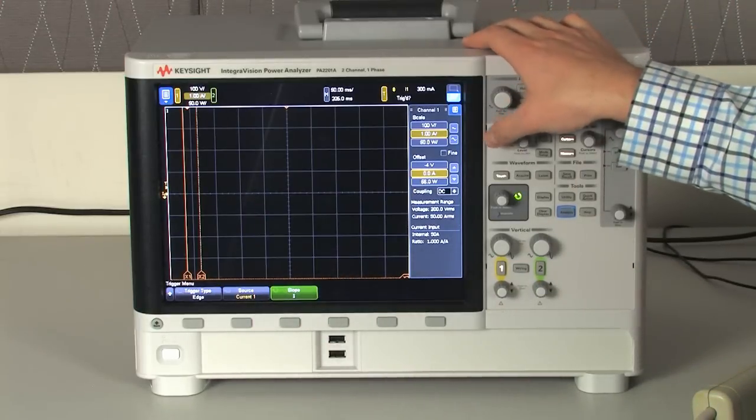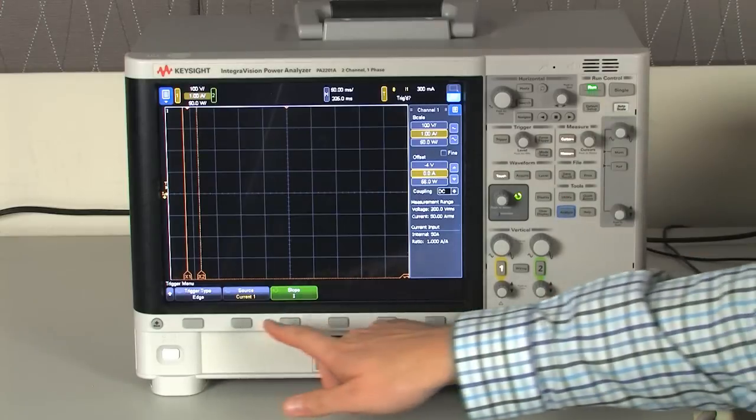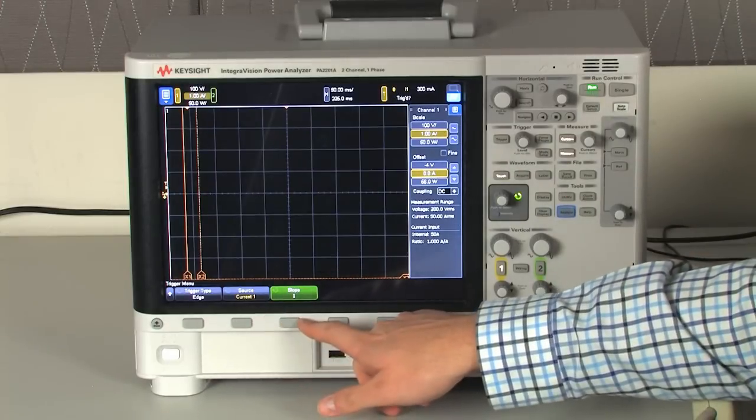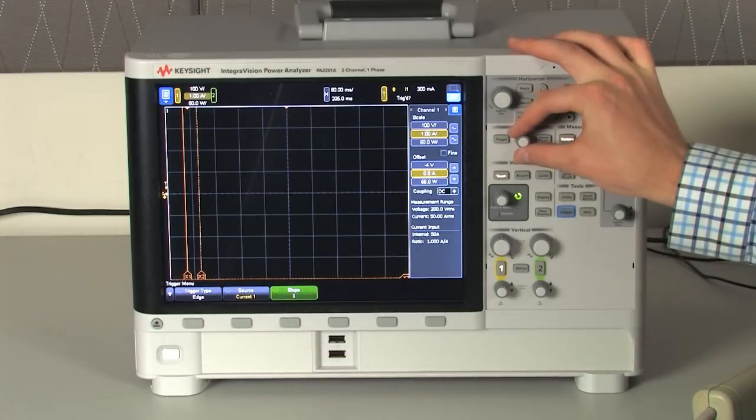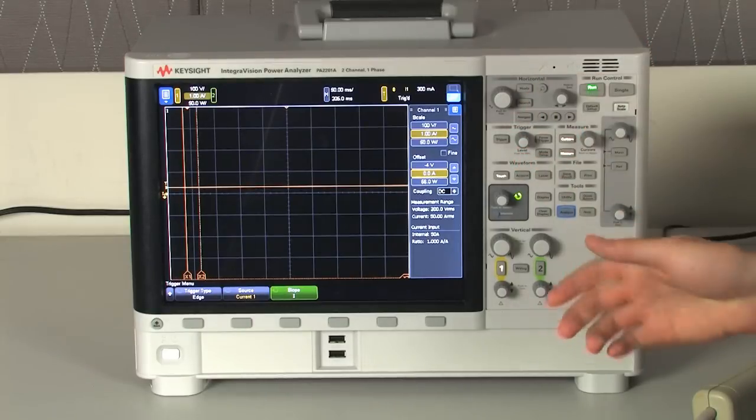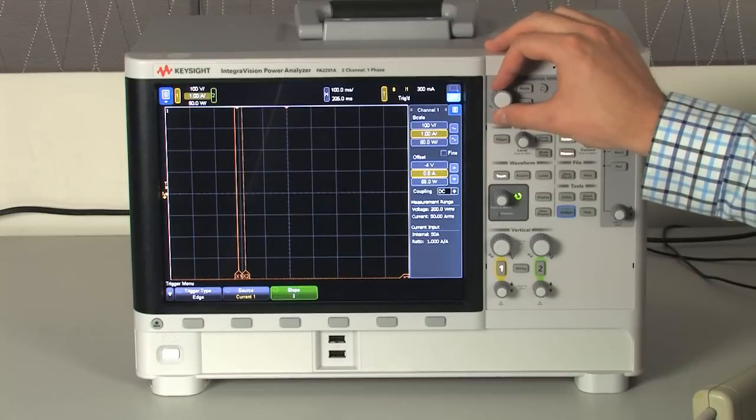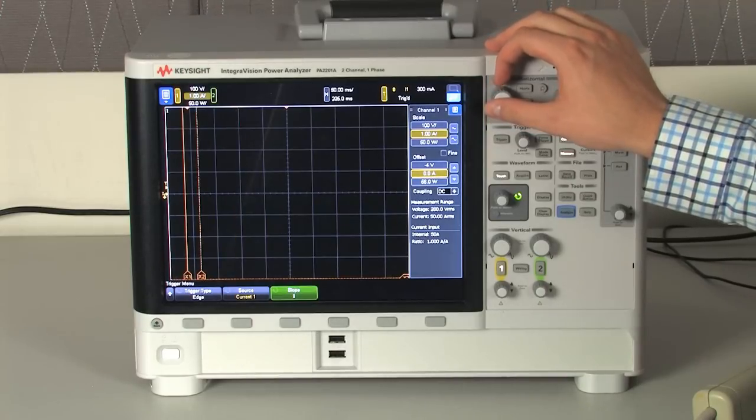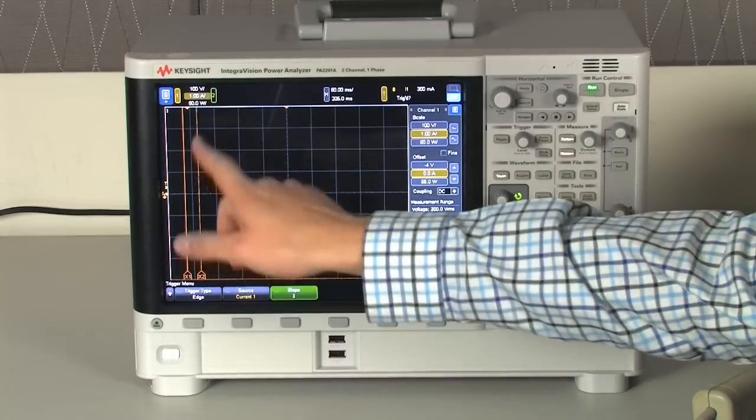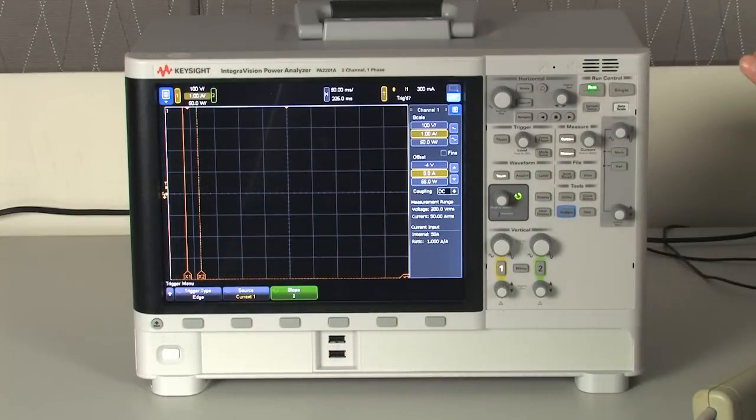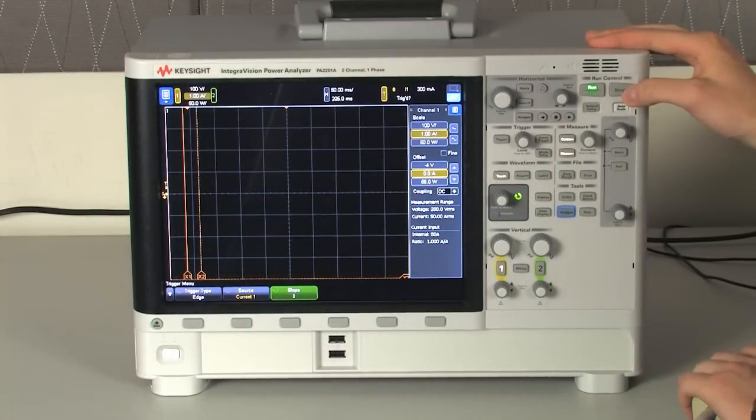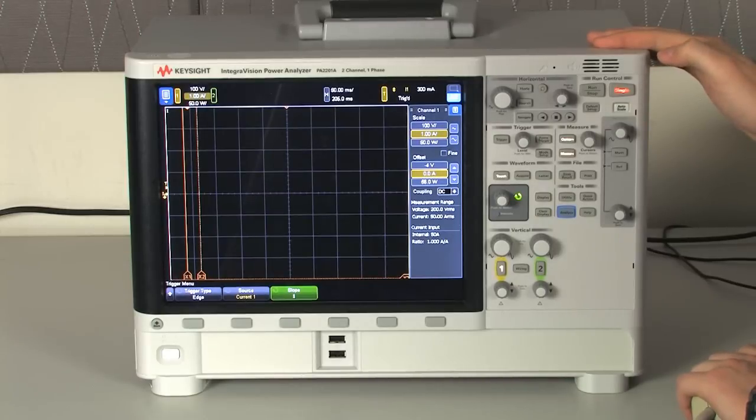The next thing is I want to change the trigger to be triggering on current 1. I'm just going to change the slope to any and set the trigger level to a level that will appropriately trigger for this application. The other thing is I adjusted the horizontal scale to be a little bit larger so I can easily capture the inrush current plus the steady state. So now I'm going to start single shot mode and see if we can capture it.